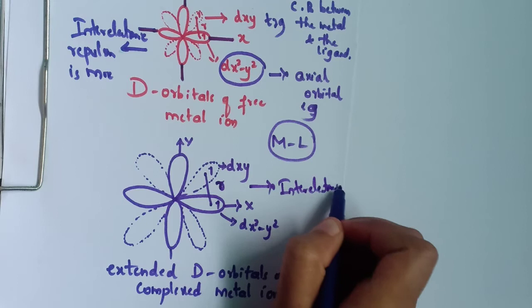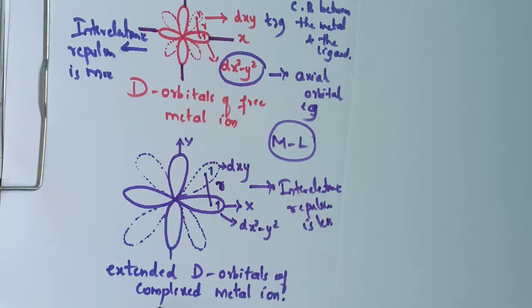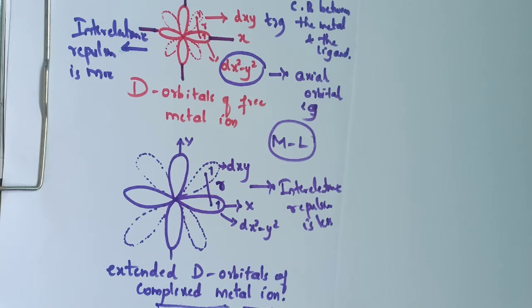The extension of d-orbitals in the complex occurs to maximize the overlap between the ligand and metal orbitals. Maximum overlapping is the essential condition for covalent bonding, which decreases the inter-electronic repulsion parameters.